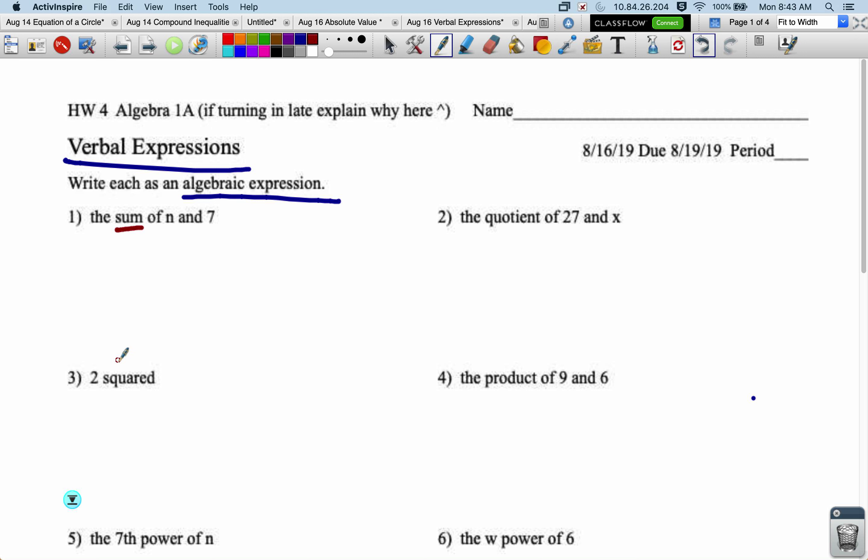The keyword here, number one, is sum. That's telling me to add. So I want to turn this into an algebraic expression. I'm going to make this n plus 7. So I keep the n and the 7 in the same order. And then the word sum tells me that the operation in between them is a plus.